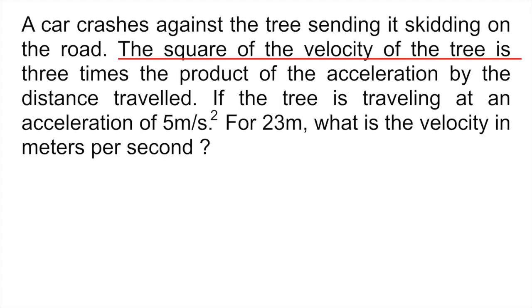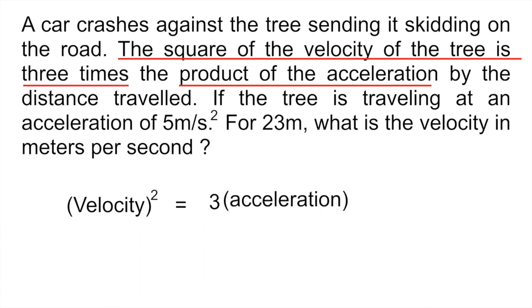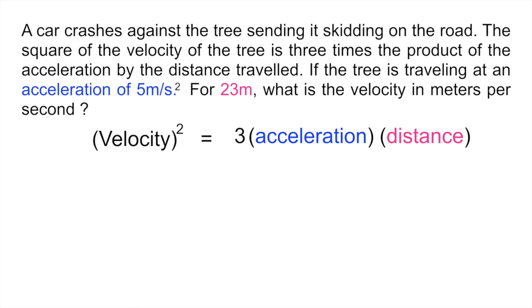They tell us in the problem the square of the velocity of the tree is, so let's take that part first, so the square of the velocity, so velocity squared is or is equal to, and then it tells us three times, so three, the product of the acceleration, so the product means that you're multiplying, so multiplied by the acceleration and then it says by the distance traveled, so by also means multiplication, so you multiply distance and there you have it that's your equation. And now it's going to be very easy for you to solve this equation because in the problem they're giving you the acceleration which is five and the distance traveled which is 23 meters.